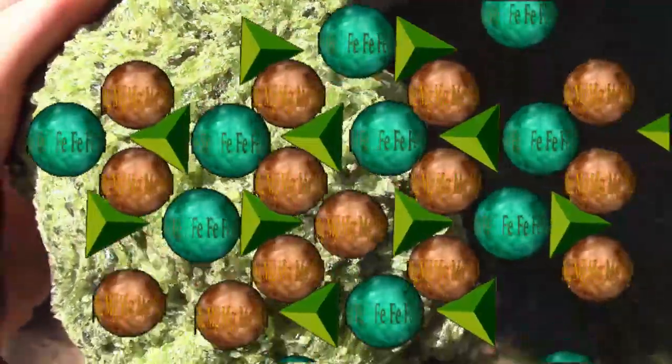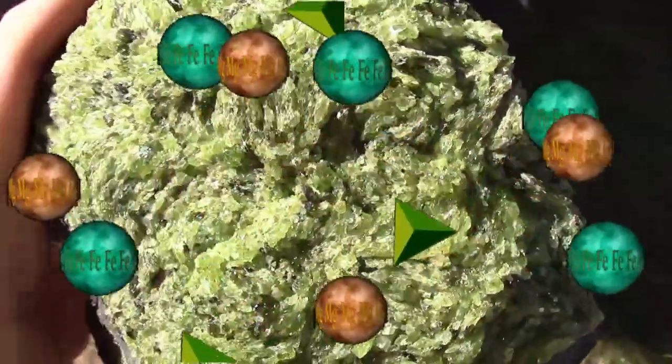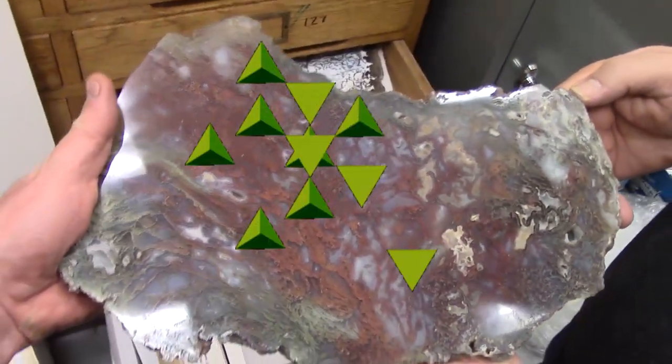Don't make your tombstone out of mafic minerals of olivine, pyroxene, amphibole, or calcium rich plagioclase feldspar. Use quartz if possible. There's a reason the sandy beaches and deserts of the world are predominantly quartz grains.